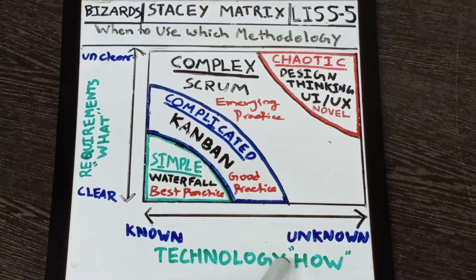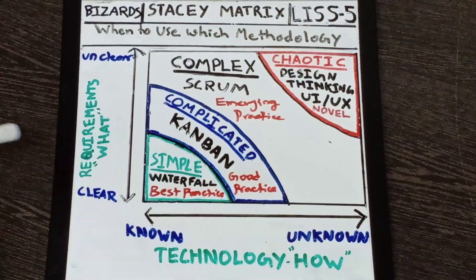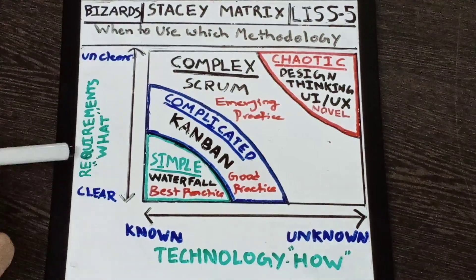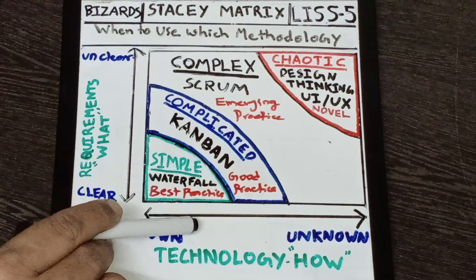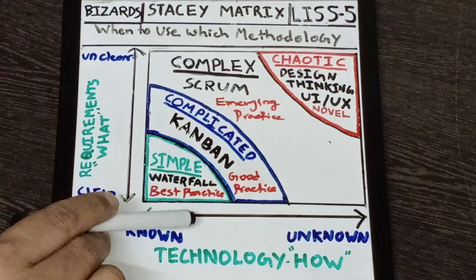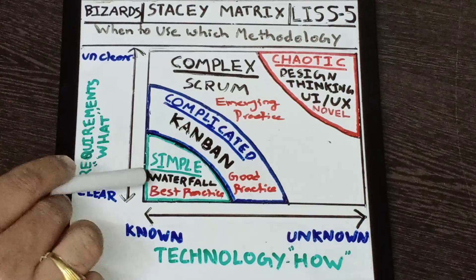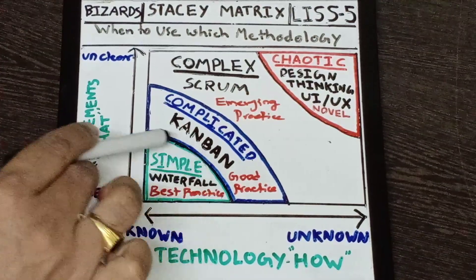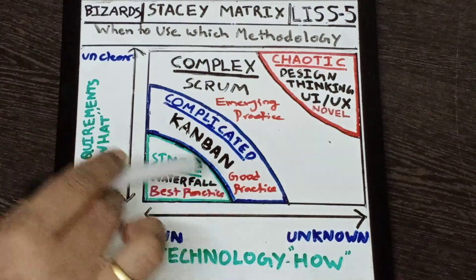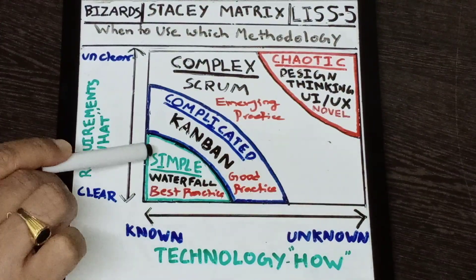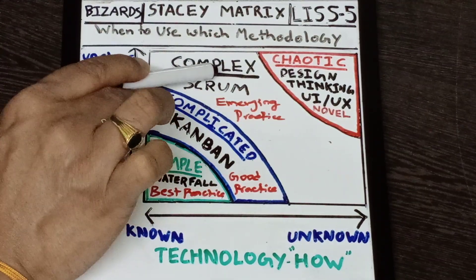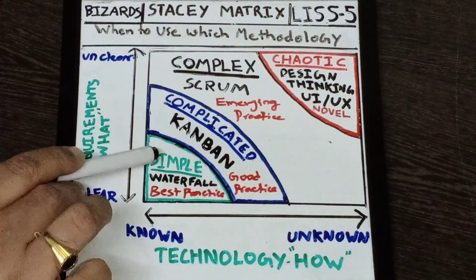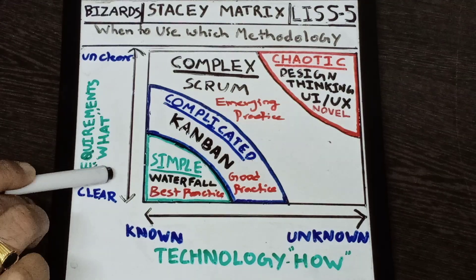When you are working on a project where you know your requirements very clearly — you know what exactly the customer wants — and you also know the technology of the solution, when both are very clear and known, we call this the simple zone. Stacy divides the entire region into four zones: simple, complicated, complex, and chaotic.